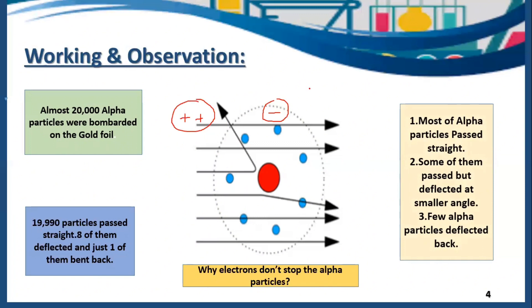You can understand this with an example. If you have a piece of paper and a fast moving bullet, does this piece of paper have the capability to stop this bullet? No, not at all. This is the same reason: the alpha particles are so strong and fast that these electrons have no ability to attract them or to stop them.